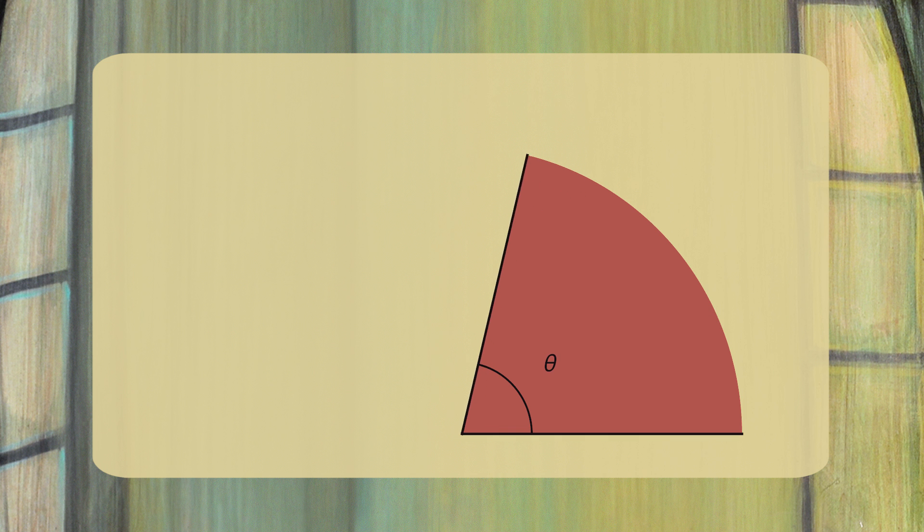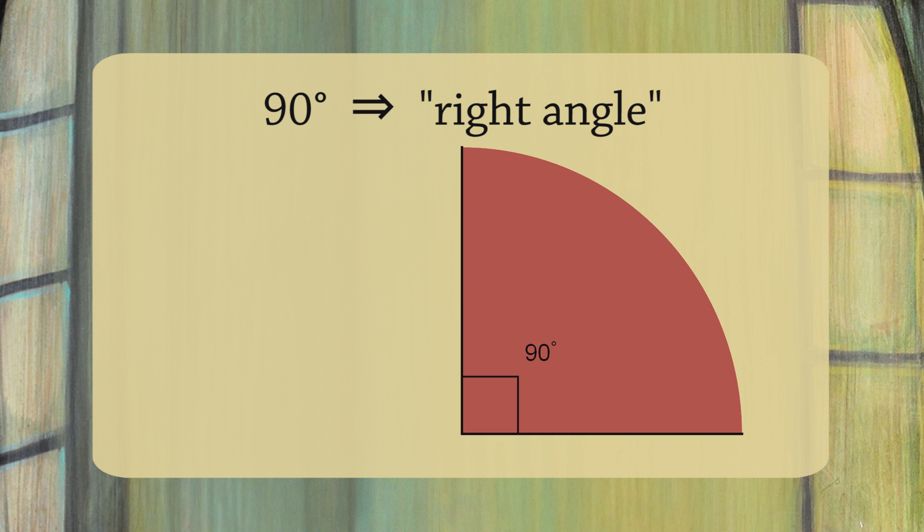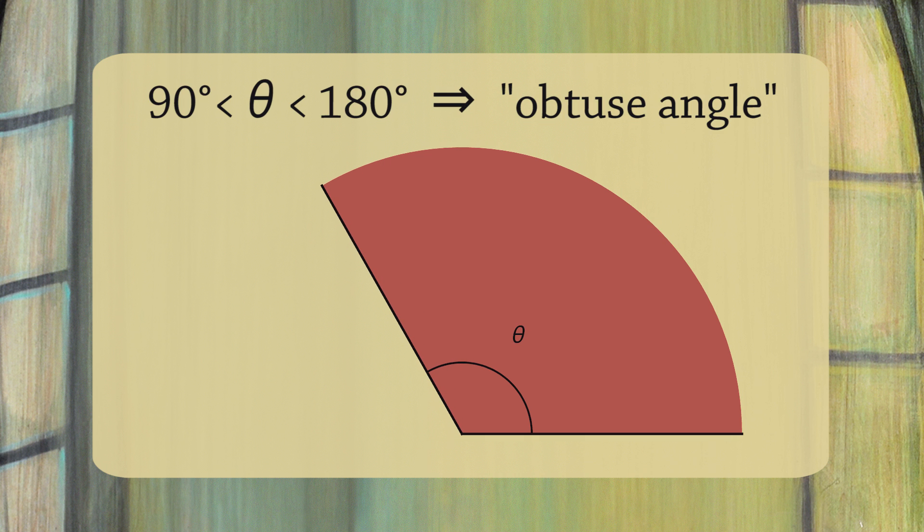If we increase the size some more until it is precisely 90 degrees, we call it a right angle. If we enlarge the angle some more so that it's bigger than 90 degrees but smaller than 180 degrees, we call it an obtuse angle.